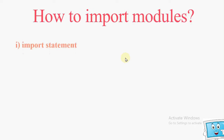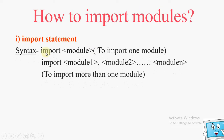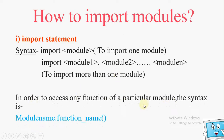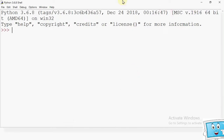We have two methods in Python to import modules. The first method is the import statement. The syntax is: import, then the name of the module. It is used to import one module. To import more than one module, we write: import module1, module2, module3 — all module names separated by commas. If we have to access a function from a module, the syntax is: module_name dot function_name followed by parentheses.